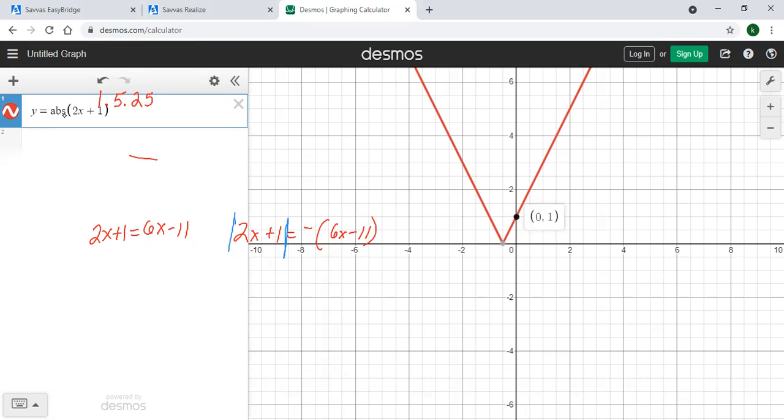Then put the other equation in. You just click down in the next row, type y equals, and this, remember my right side was just the 6x-11. 6x-11.